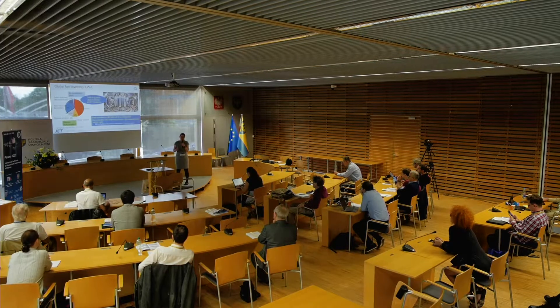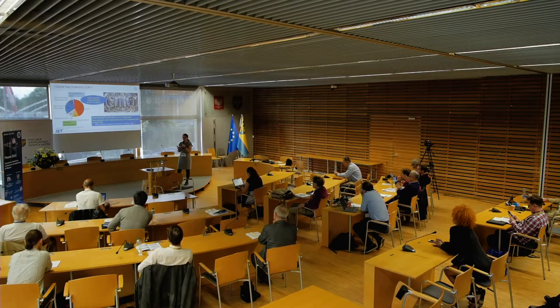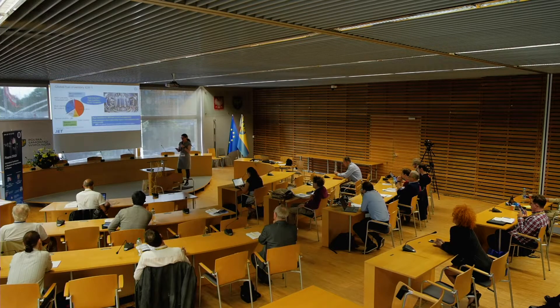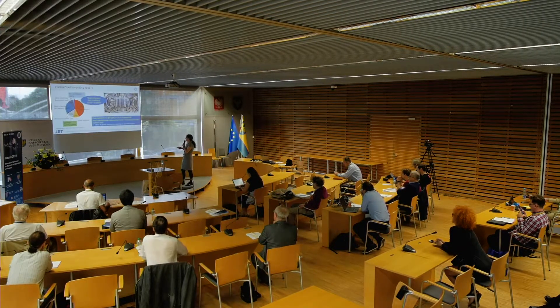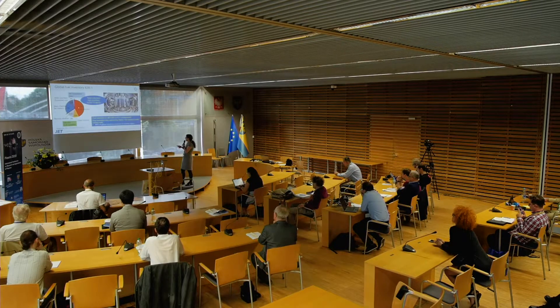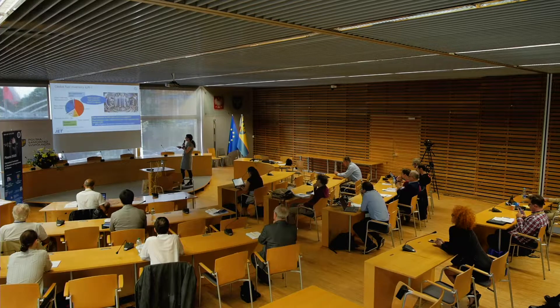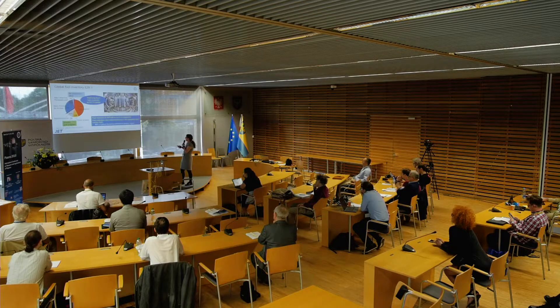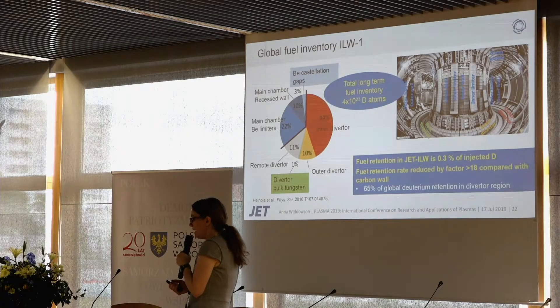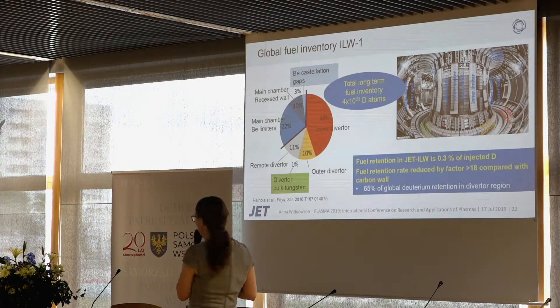Taking all the data together to understand global fuel retention, we see most fuel at the inner divertor, with some at the outer divertor, some in remote regions, a small amount in the bulk tungsten, and in the main chamber most retention is on the limiters with a small amount in the gaps. Overall, 0.3% of the injected fuel ends up on the chamber wall, which is significantly lower than with the carbon wall.